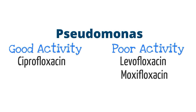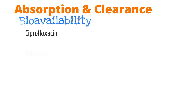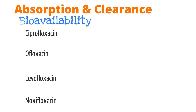Now that we've talked about the bacterial coverage of the fluoroquinolones, it's important to discuss how these drugs are absorbed and cleared. Fluoroquinolones are absorbed well in the upper GI tract. One of their advantages is that they have a bioavailability that exceeds 50% and actually reaches 100% in some cases. This means for some fluoroquinolones, administering IV provides no greater bioavailability than administering it orally. Specifically, bioavailability for cipro is 70%, greater than 95% for ofloxacin and levofloxacin, and greater than 85% for moxifloxacin.